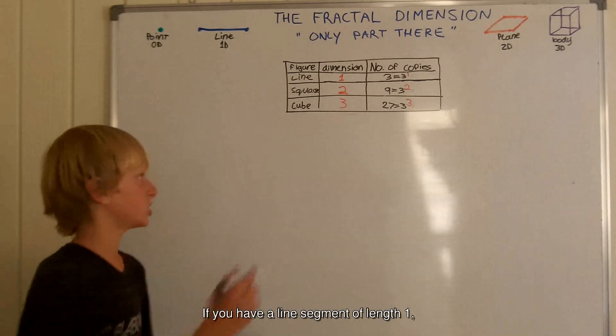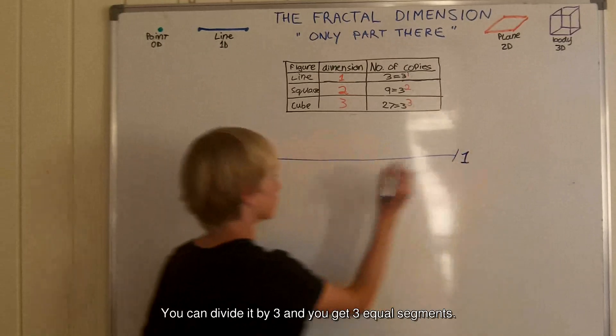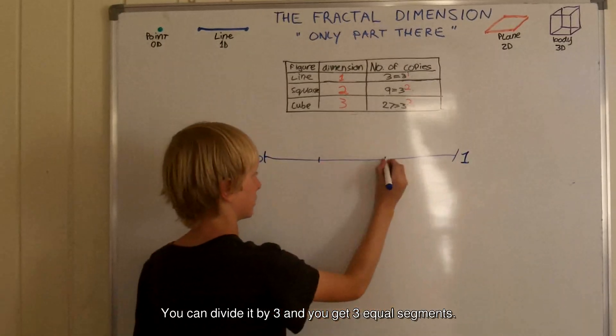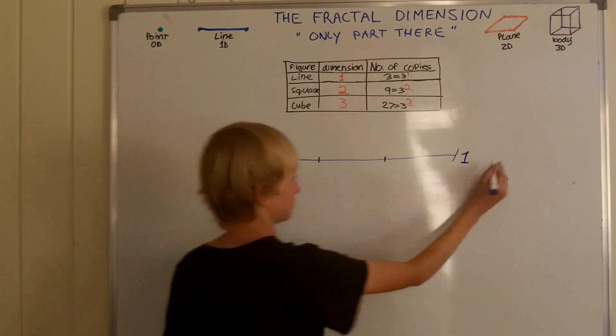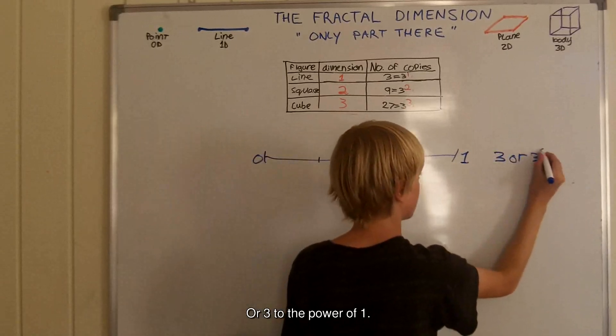If you have a line segment of length 1, you can divide it by 3 and you get 3 equal segments, or 3 to the power of 1.